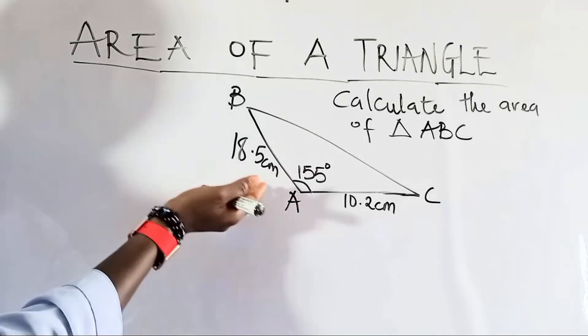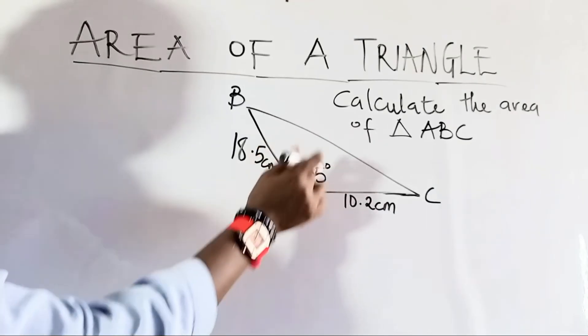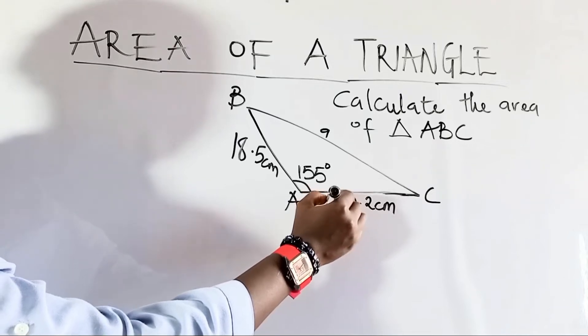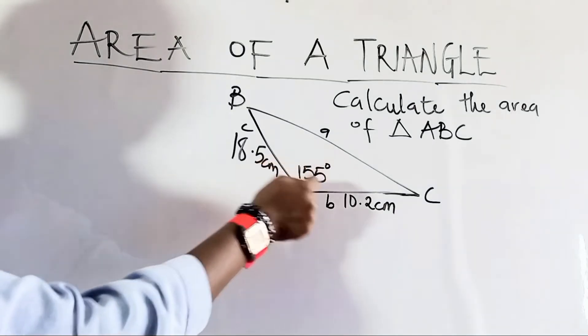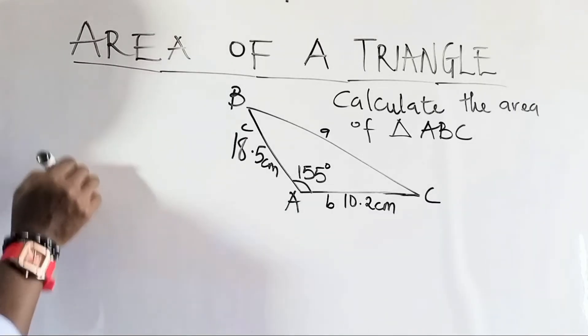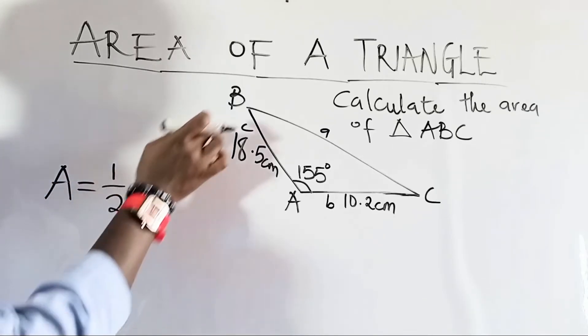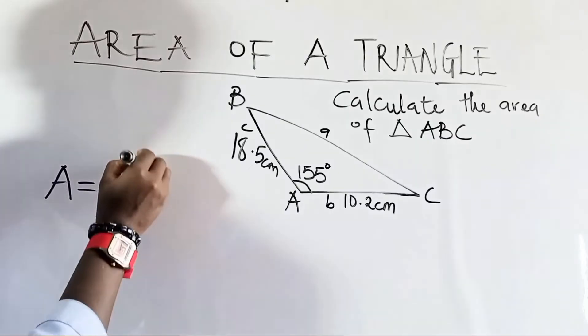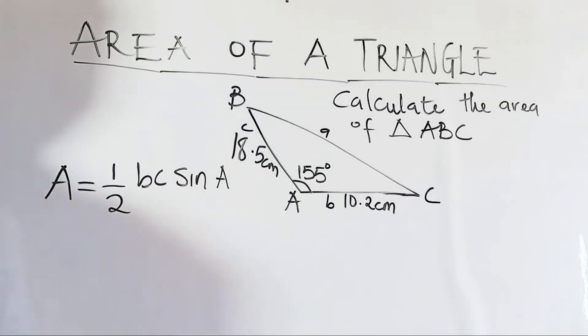So before we use the formula, let us identify the sides. So if this angle A, the side facing angle A would be A and we have angle B here. So this side facing angle B would be B and this side would be C. Now this formula we're going to use would include the angle because we have an angle. So the area of this triangle becomes 1 over 2 times B times C times sine A. This is the formula we are going to use.